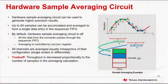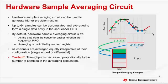Each ADC module has a hardware sampling averaging circuit that can be used to generate higher precision results. The averaging circuit can accumulate up to 64 samples and average them to form a single data entry in the sequencer FIFO. By default, the hardware sample averaging circuit is off and all data from the converter passes through the sequencer FIFO. All channels are averaged equally irrespective of their configuration — single-ended or differential. It is important to understand that throughput is decreased proportionally to the number of samples in the averaging calculation.